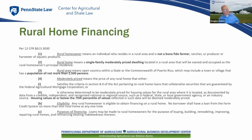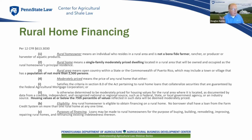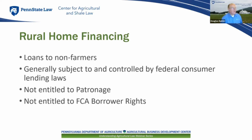Rural home financing: the regulation provides that this is not available to a bona fide farmer. It must be a single-family home that is moderately priced — moderately priced per the regulation means in the 75th percentile or less of values. It must be situated in a community of less than 2,500 people. Eligibility: you can get one such loan; you can't buy multiple homes with this type of financing. The purpose can be buying the home, building the home, remodeling, improving or repairing the home, or refinancing that debt. For non-farmers obtaining rural home financing, these loans are generally subject to federal consumer lending laws. Those borrowers are not entitled to patronage and they are not entitled to borrower rights.